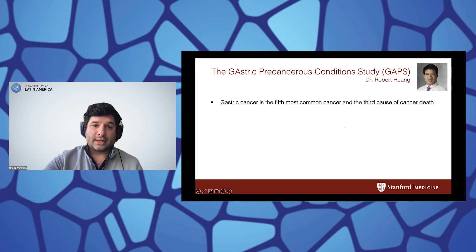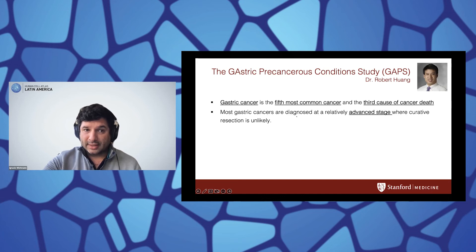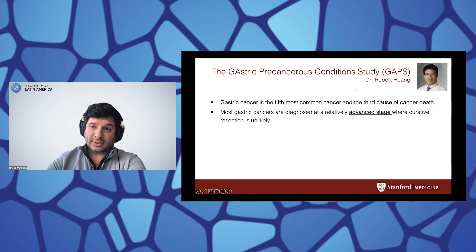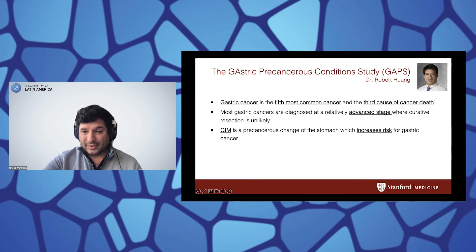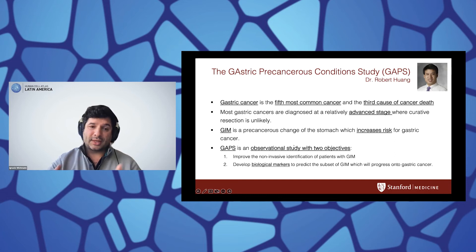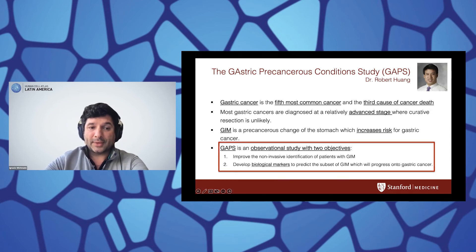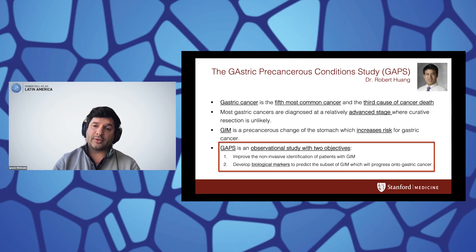This is more important considering that gastric cancer is the fifth most common cancer and the third cause of cancer death. Most gastric cancers are fatal because they're diagnosed at an advanced stage where curative treatment is no longer an option. That is where the Gastric Precancerous Condition study (GAPS) based at Stanford University, led by Dr. Robert Huang and Dr. Jiahua Huang, has come to accrue samples and tackle this problem — studying these lesions to improve non-invasive identification of patients with gastric intestinal metaplasia and to develop biological markers to predict which metaplasia might progress to gastric cancer.